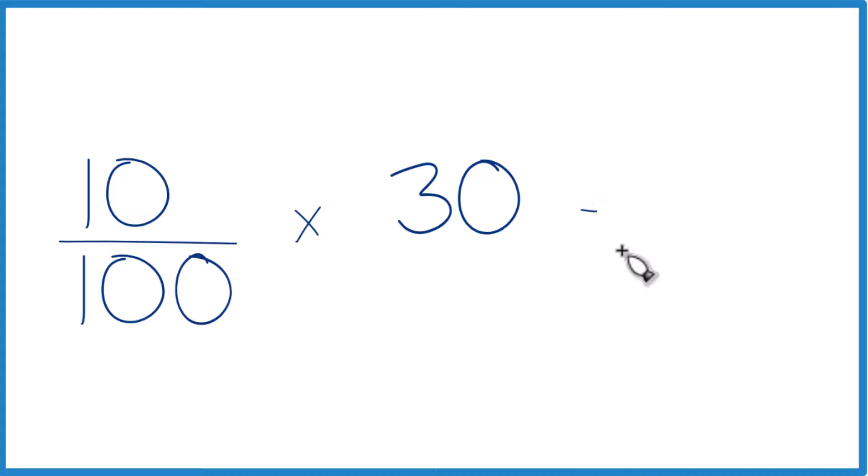The other way is to think of this as 10 over 100 times 30. We're going to call it 30 over 1. Because now we just take 10 times 30. That gives us 300. And then we take 100 times 1. That gives us 100.